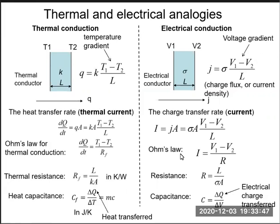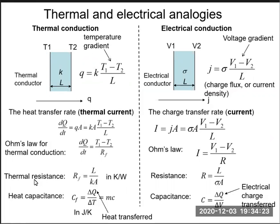We use Ohm's law developed for electrical conduction to describe thermal conduction. The thermal resistance RF equals L over KA, where L is the length, K is the thermal conductivity, and A is the cross-sectional area — very similar to electrical resistance R equals L over sigma A. We simply replace electrical conductivity with thermal conductivity to get thermal resistance.